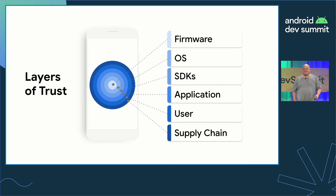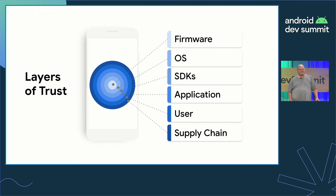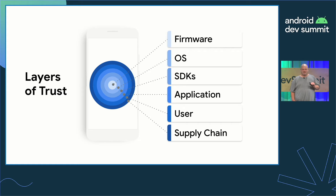Instead of asking, do I trust my app, or do I trust this request against my back end, trust in your app is more complicated. You must ask, do I trust each and every part of this picture? The firmware, the OS, the application, the device, and the user. We call this layers of trust.